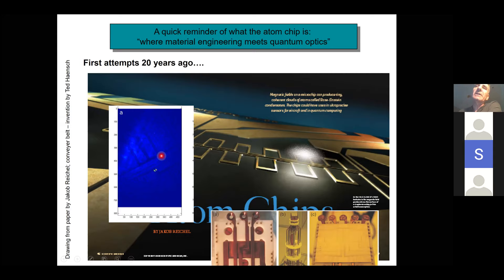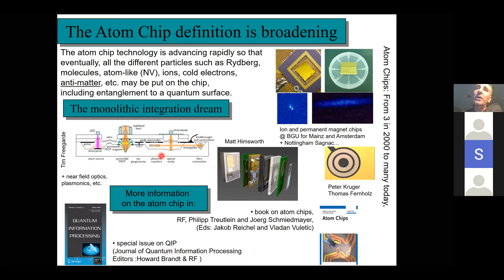The atom chip is not a static project — its definition is broadening quickly and the field is exploding. If we started with ground state atoms 20 years ago, now you can find on atom chips Rydberg atoms, cold molecules, cold ions, cold electrons. And now in the latest project we're bringing an atom chip to CERN to trap and manipulate anti-hydrogen atoms — a very nice project together with collaborators at CERN and in Europe.